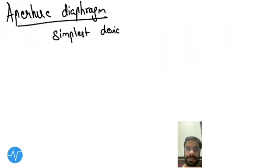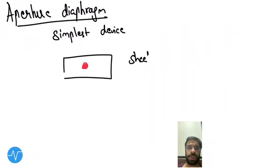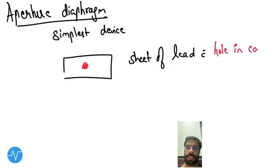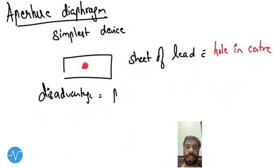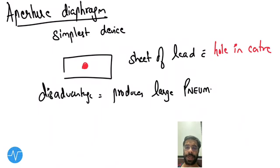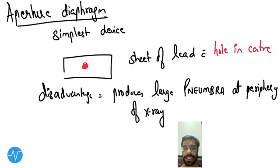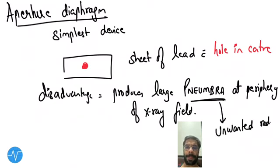The first restricting device is the aperture diaphragm — it is the simplest device. In the diagram, the red spot represents the gap, which is the hole in a sheet of lead. The disadvantage of the aperture diaphragm is that it produces a large penumbra at the periphery of the x-ray field. Penumbra is unwanted radiation at the periphery.